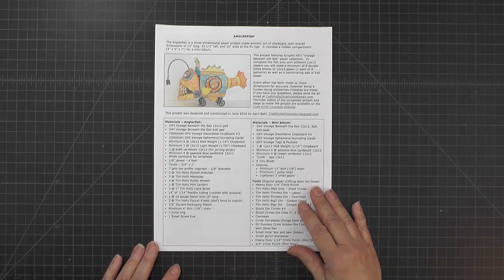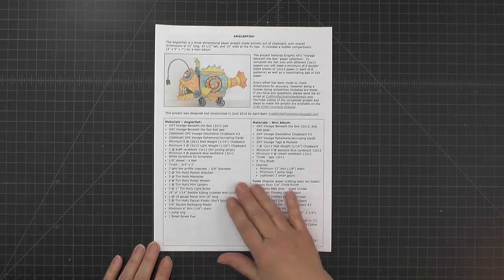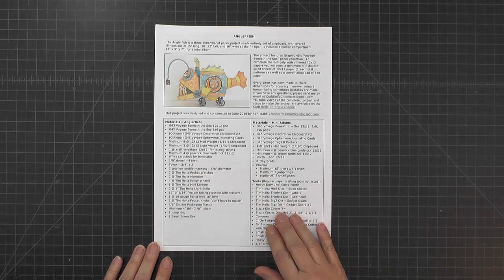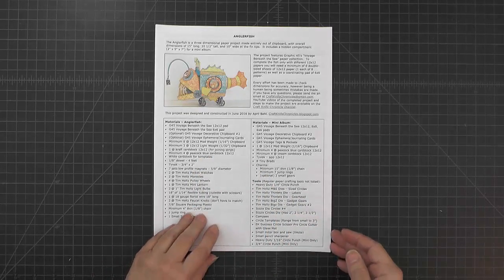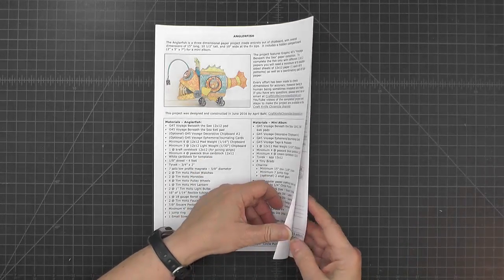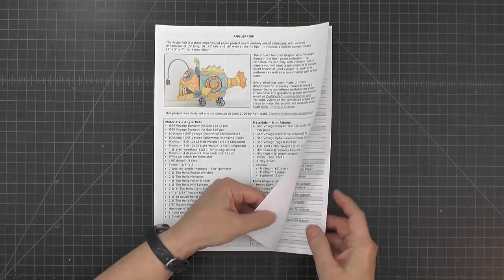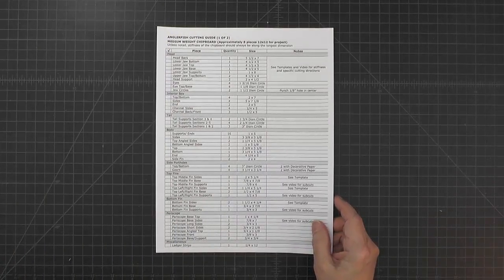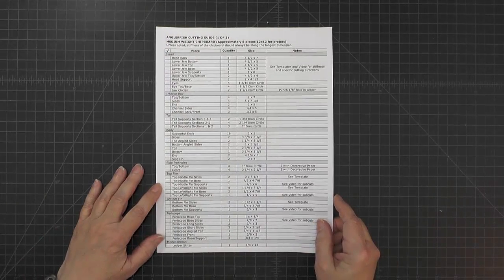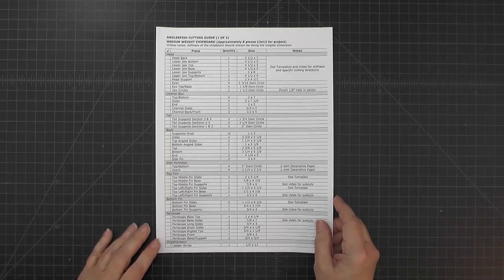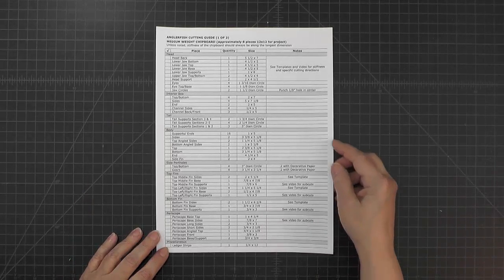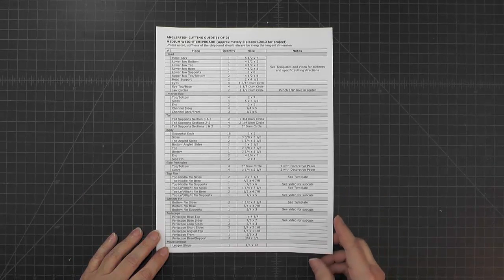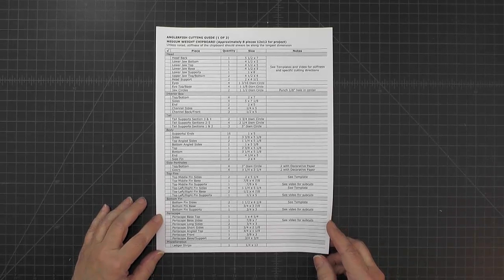And then some of the special tools that I would use. I didn't list any of the regular paper crafting tools that you would normally have on hand. We'll talk more about some of these items in a moment. And then on the second and third pages we have the cutting guide.